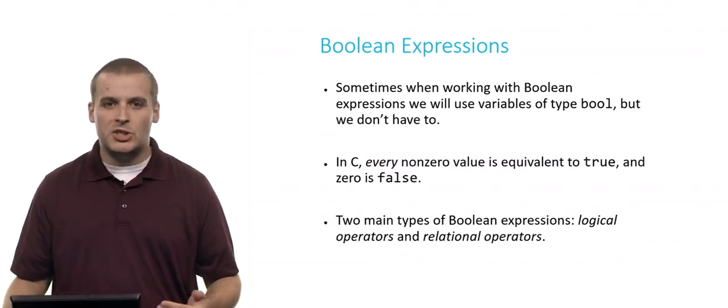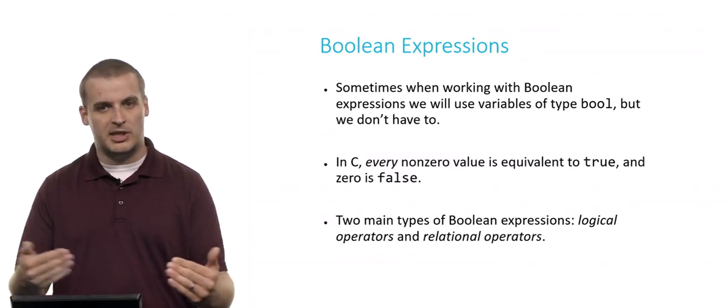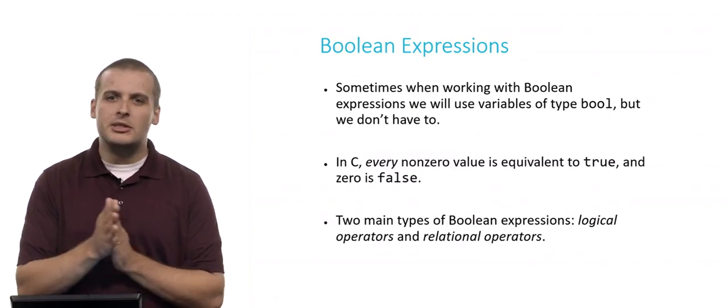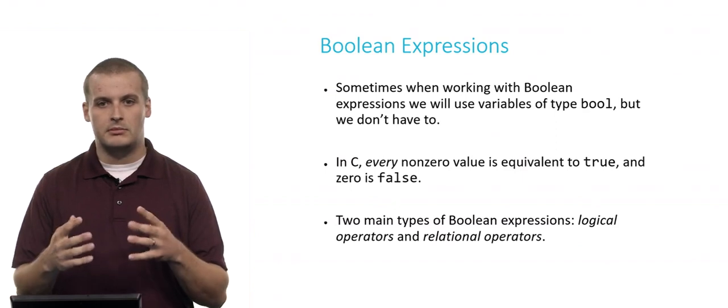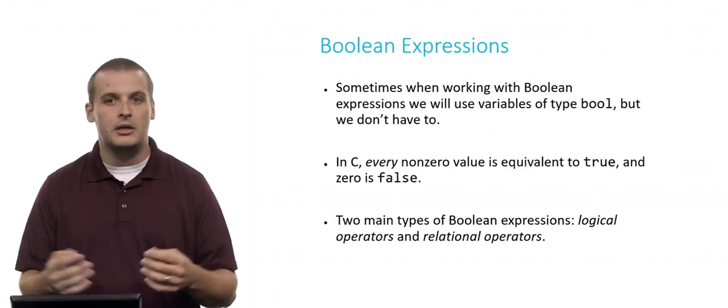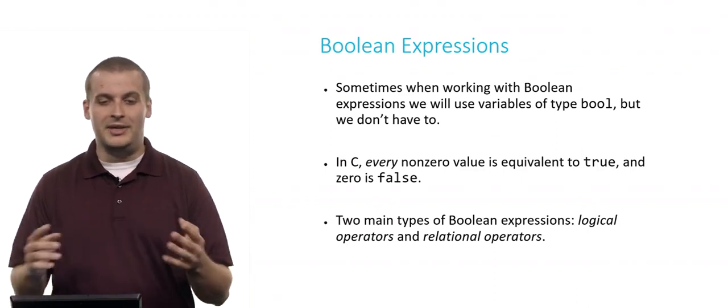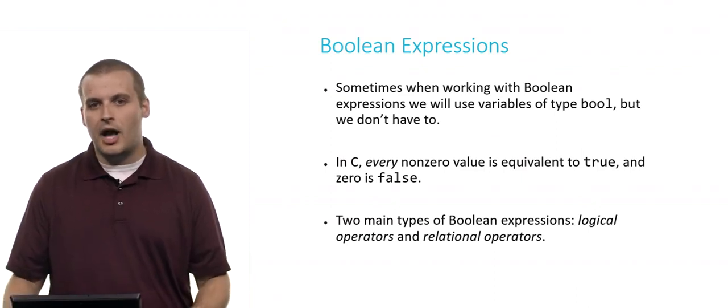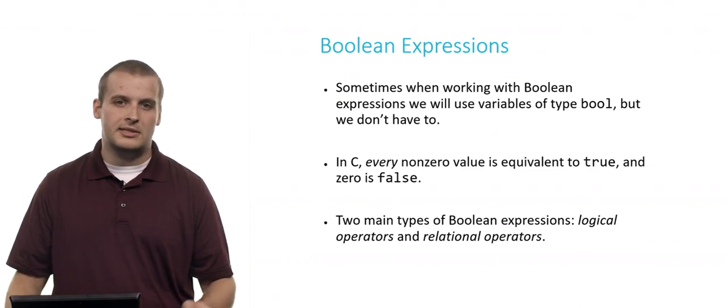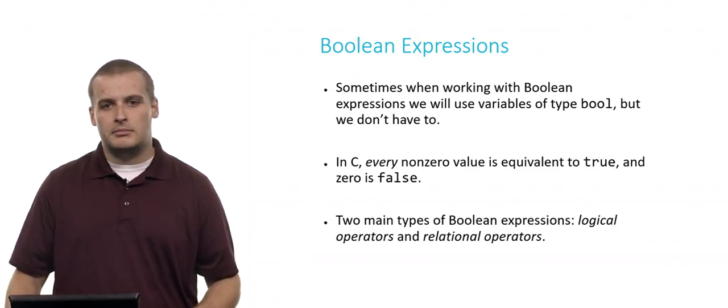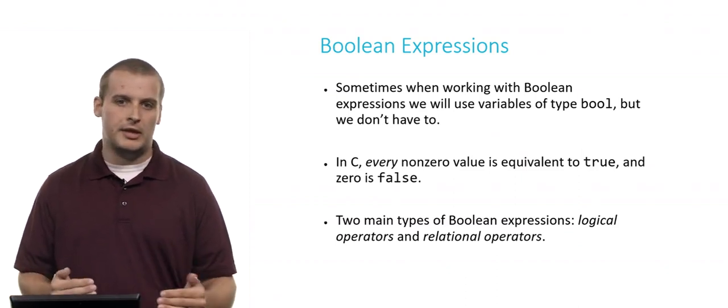Sometimes when we're working with Boolean expressions, we will use variables of type bool. You might have declared a bool type variable, and you'll use it in your Boolean expression. But you don't always have to. As it turns out in C, every non-zero value is the same as saying true. If you had declared a variable of type Boolean and assigned it the value true, that's the same as declaring an integer and assigning it the value 1, 2, 3, or really any value whatsoever other than 0. Because in C, every non-zero value is true. 0, on the other hand, is false. This might come in handy later on to know. We don't always have to use Boolean type variables when we are working with Boolean expressions.